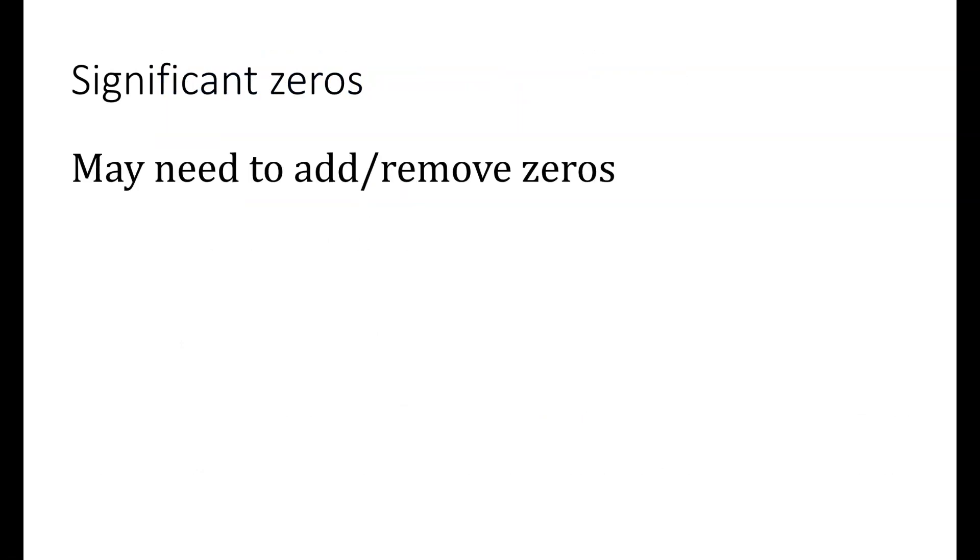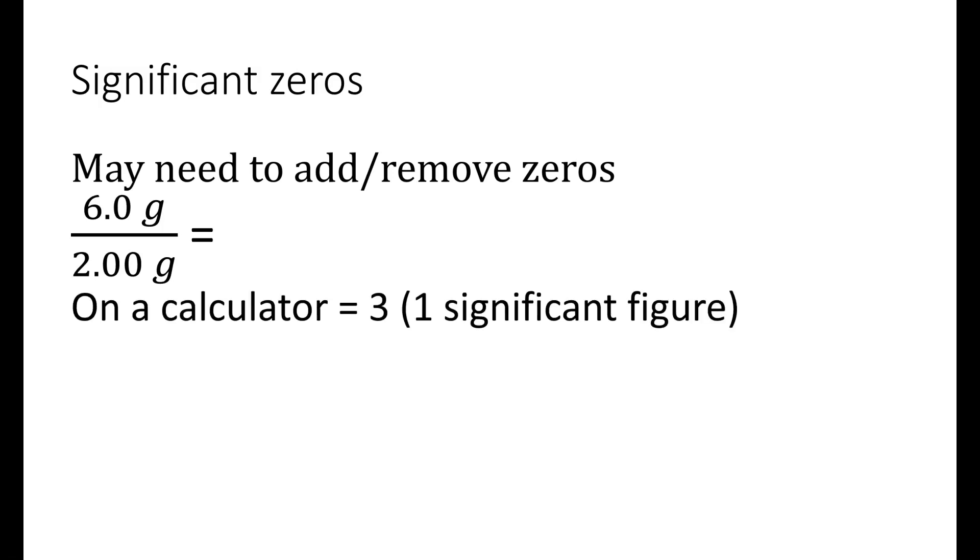Sometimes when we're doing our calculations, we're going to find that the calculator value gives us a different number of zeros than we need for our final answer. This example is a good way of showing it. If we have 6.0 grams and we divide by 2.00 grams, on a calculator we would get the number 3. That gives us one significant figure, but our initial values had two significant figures and three significant figures respectively.